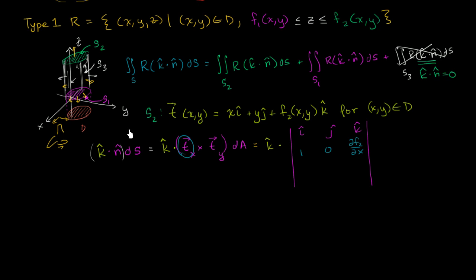And then the partial of t with respect to y. This is going to be 0, 1. 0, 1. And the partial of f2. Partial of f2 with respect to y. And then, of course, we have to multiply times dA.